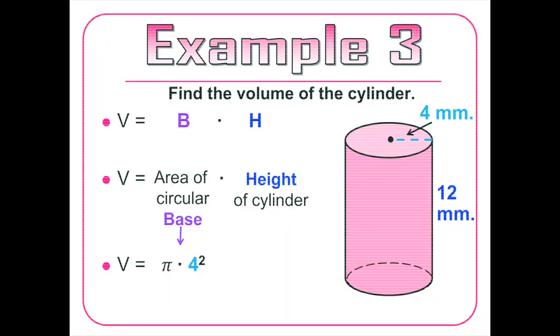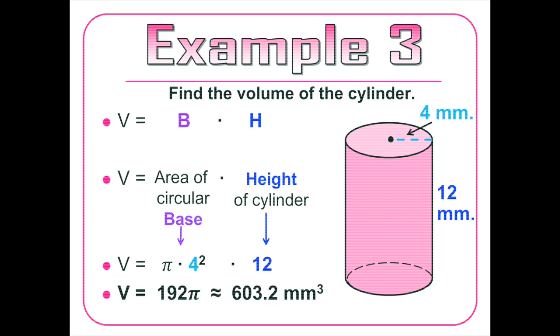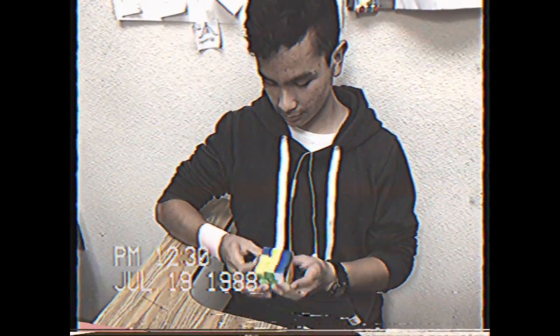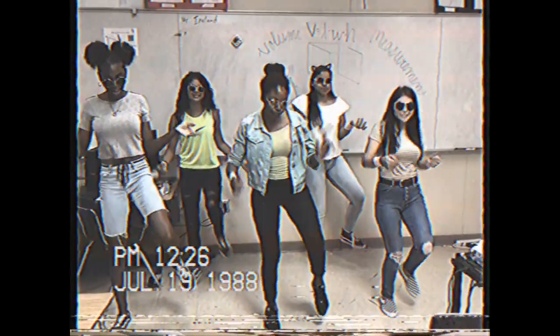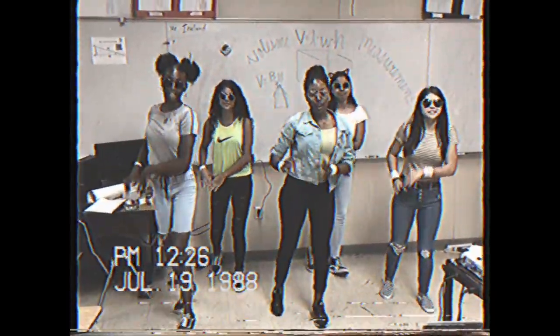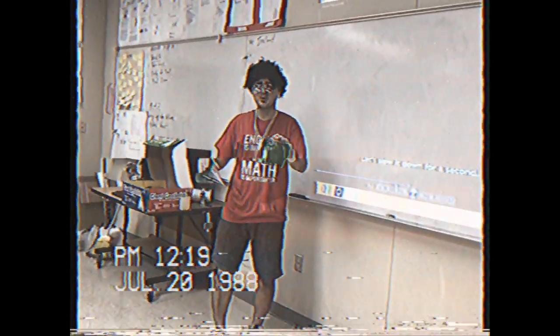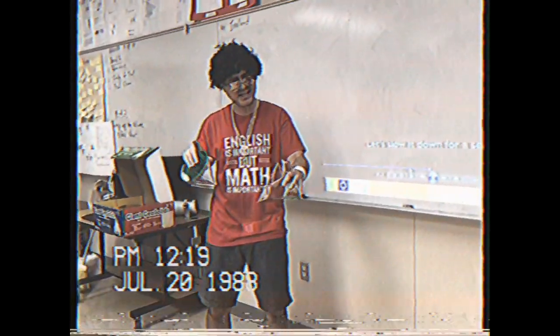If you have a cylinder, change the base by pi r squared. Multiply by the height, that's right. Let's get these volume measurements — it don't make no sense. Get these volume measurements, you know you can do this.